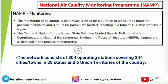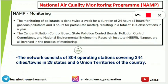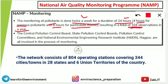Monitoring under NAMP is done twice a week for a duration of 24 hours. Within that period, gaseous pollutants are sampled for four hours and particulate matter (PM2.5 and PM10) for eight hours. This results in a total of 104 observations per year at each monitoring location.